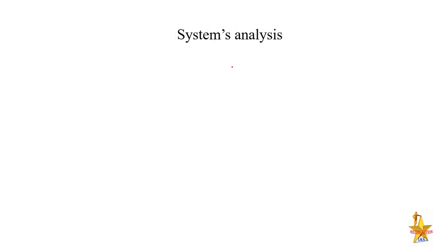A small additional concept is systems analysis. In human geography, we discussed Bertalanffy's concept and Chorley's concept of systems. Based on those, a system is of two types: open system and closed system (there is also isolated system but that is used in physics, not geography). A closed system is one where no mass or energy transfer occurs with the outside — like Davis's model, where upliftment happens first and then only erosion takes place, meaning a single factor works and the system is closed. Penck's model, by contrast, is an open system where all factors act simultaneously.